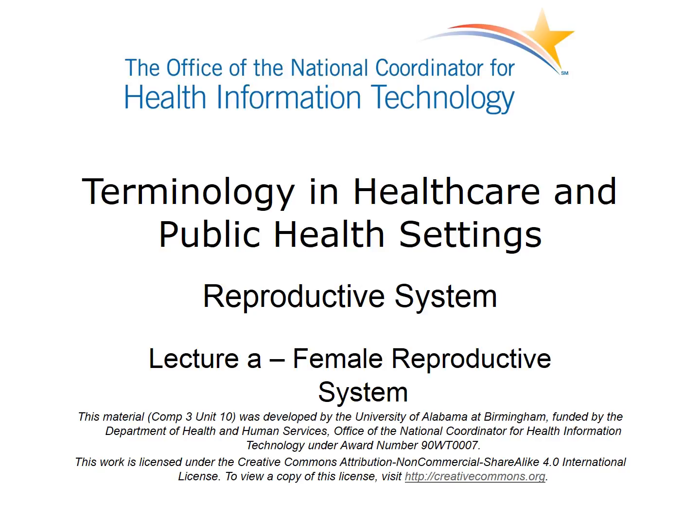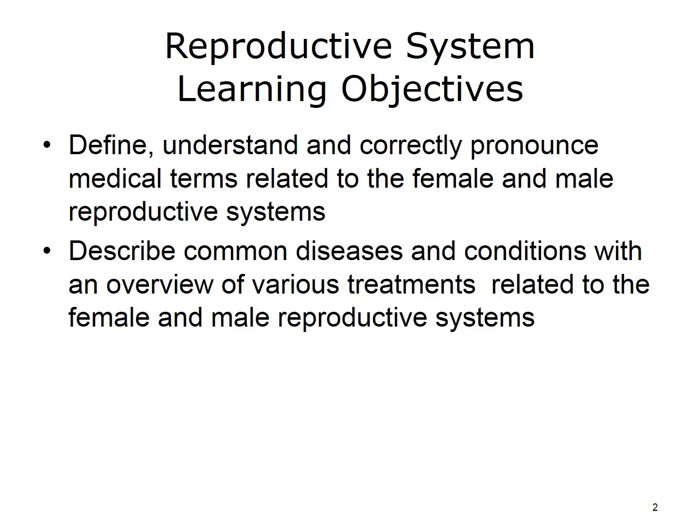Welcome to Terminology in Healthcare and Public Health Settings – Reproductive System. This is Lecture A – The Female Reproductive System. The objectives for this unit are to define, understand, and correctly pronounce medical terms related to the Female and Male Reproductive Systems, and to describe common diseases and conditions with an overview of various treatments related to both systems.